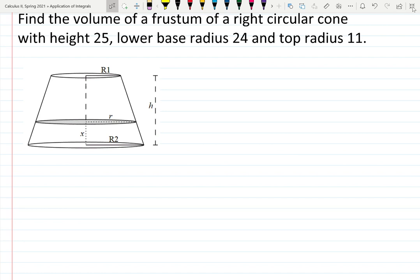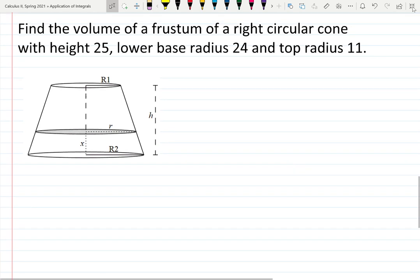One more video about discs or washers methods, but in this case we don't even rotate anything. We're asked to find the volume of the frustum of a right circular cone with height 25, lower base radius 24 and top radius 11.